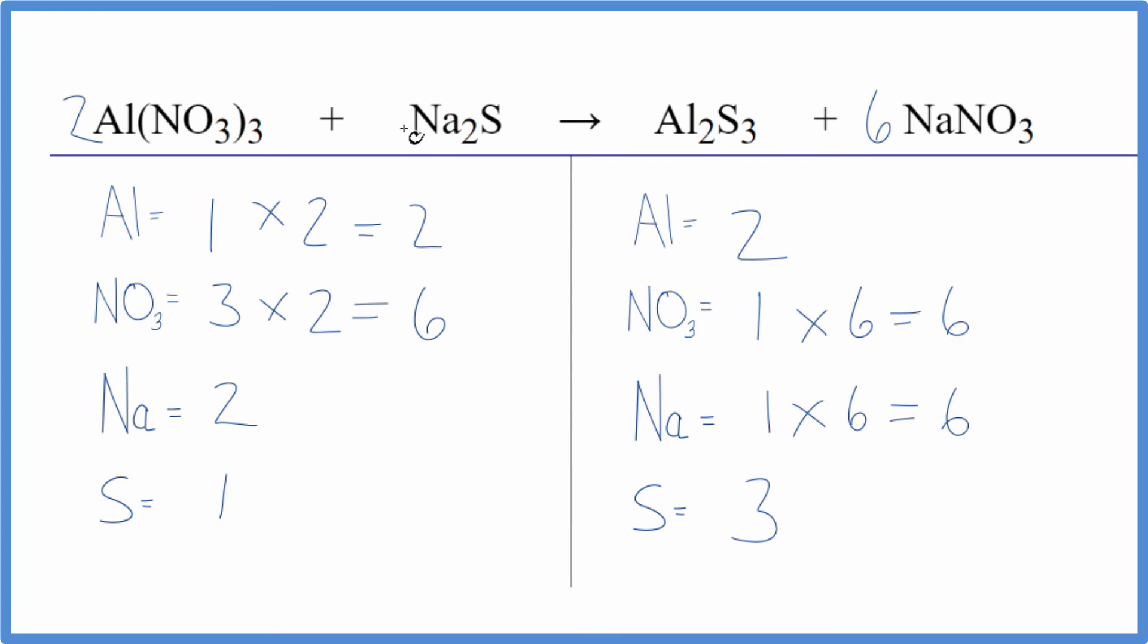Let's just put a 3 in front of the sodium sulfide. 2 times 3. That equals 6. Those are balanced. 1 times 3. That equals 3. Those are balanced, and we're done.